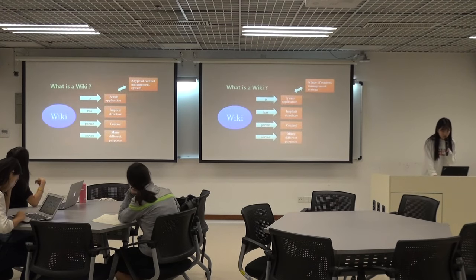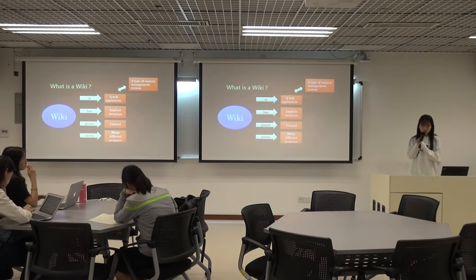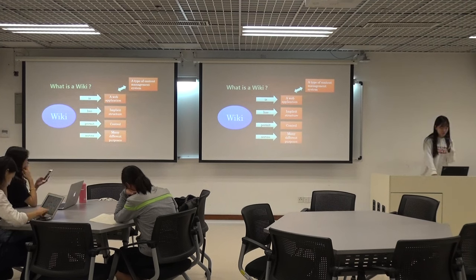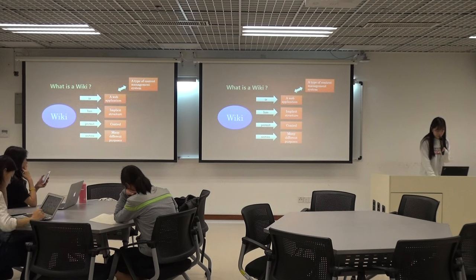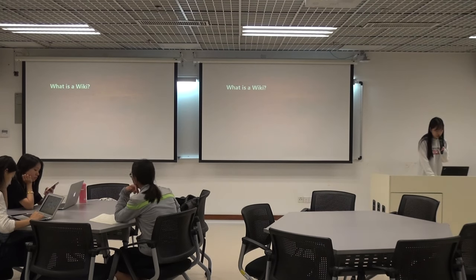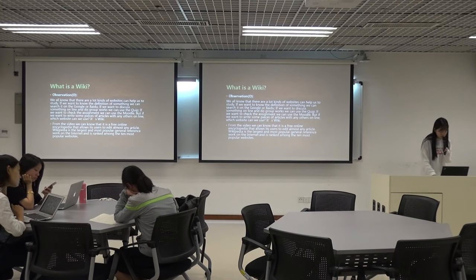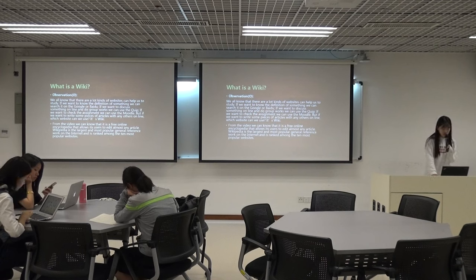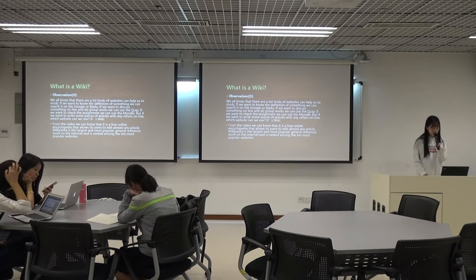The next topic is wiki. Wiki is a web application — a type of content management system. It has an intricate structure that permits control and serves many different purposes. We can know that it allows users to edit most any article. Wikipedia is the largest and most popular general reference work on the internet and is ranked among the 10 most popular websites.